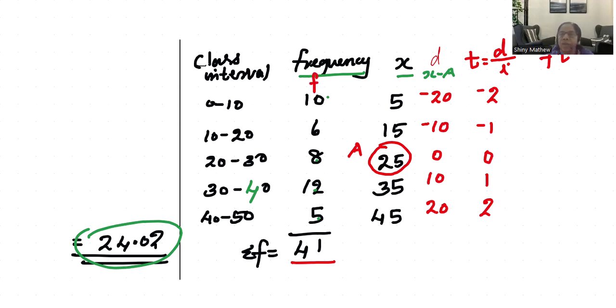10 times negative 2 is negative 20. 6 times negative 1 is negative 6. 8 times 0 is 0. 12 times 1 is 12. 5 times 2 is 10.